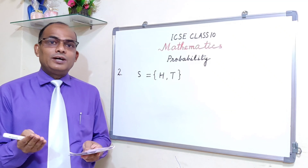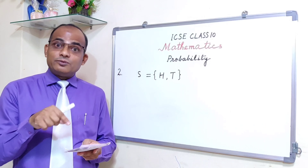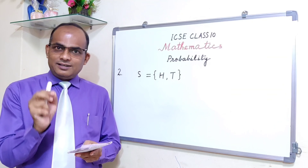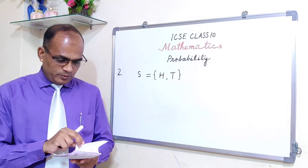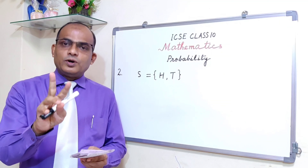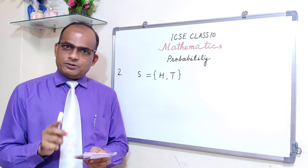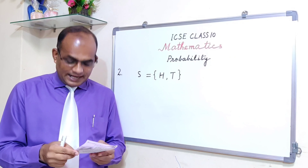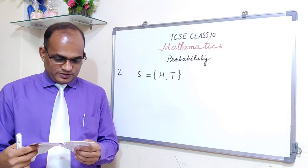The important thing is to understand the meaning of 'at least' and 'at the most' — this is where students make mistakes. Two coins are being tossed simultaneously and we have to find out the probability of getting at least one tail and at the most one tail.